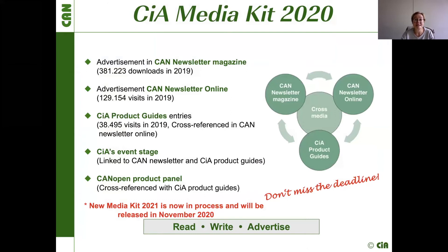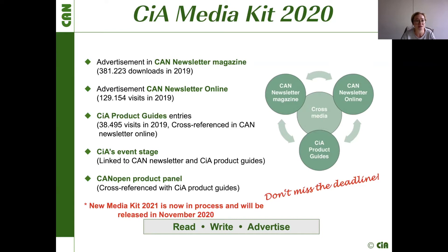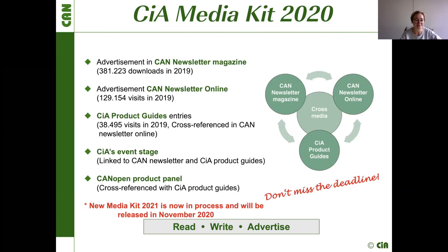Our media kit for next year is currently in process and will be released in November. You can download our current media kit, which includes figures and facts from Google Analytics — for example, the number of downloads of the technology magazine in 2019, website visit counts from the previous year, and figures about product guides.